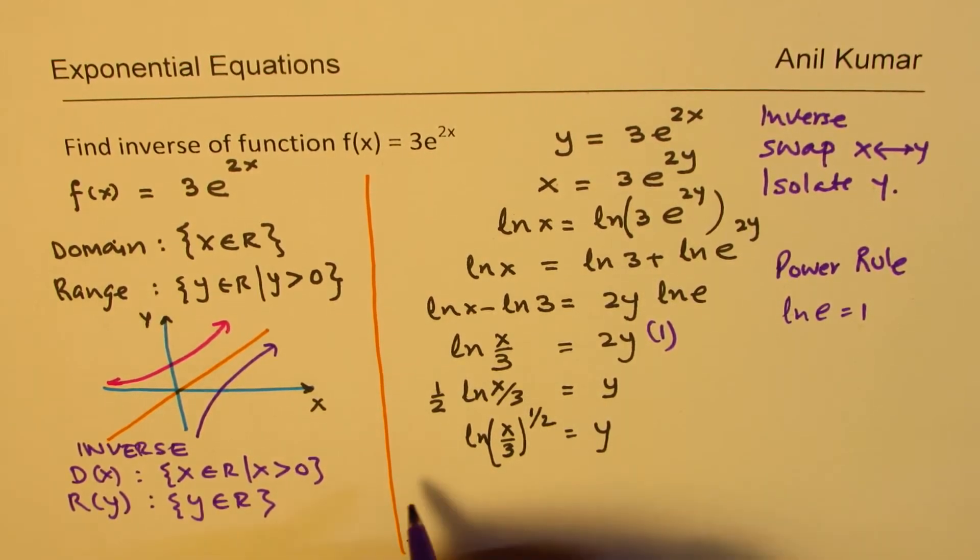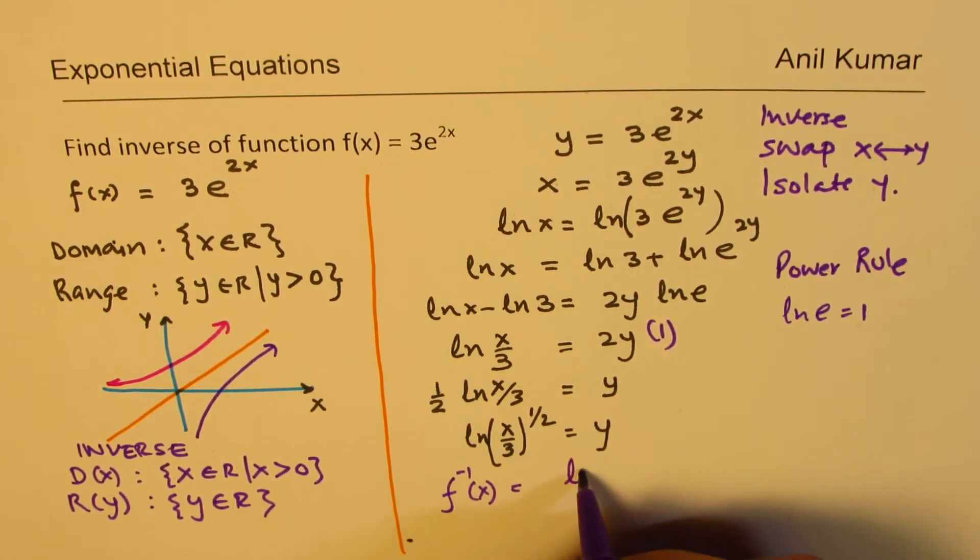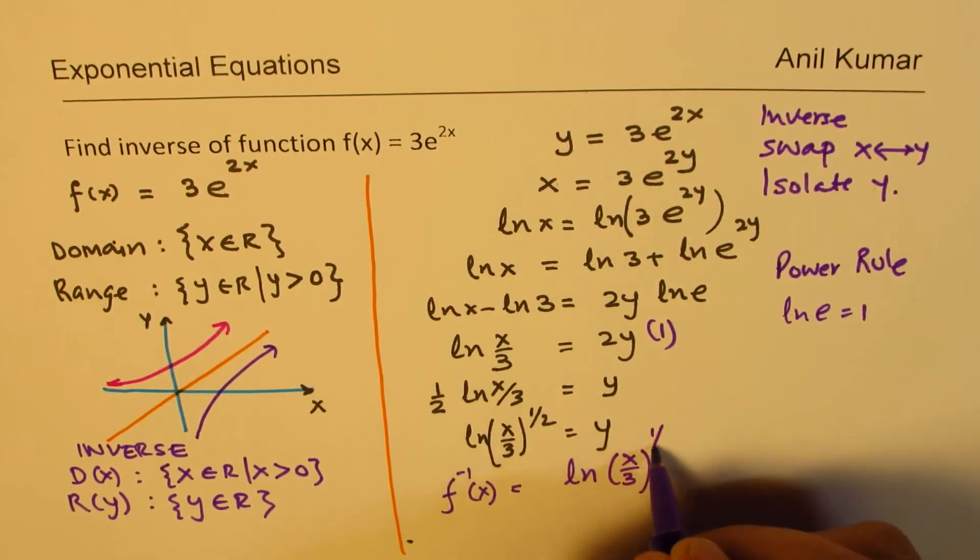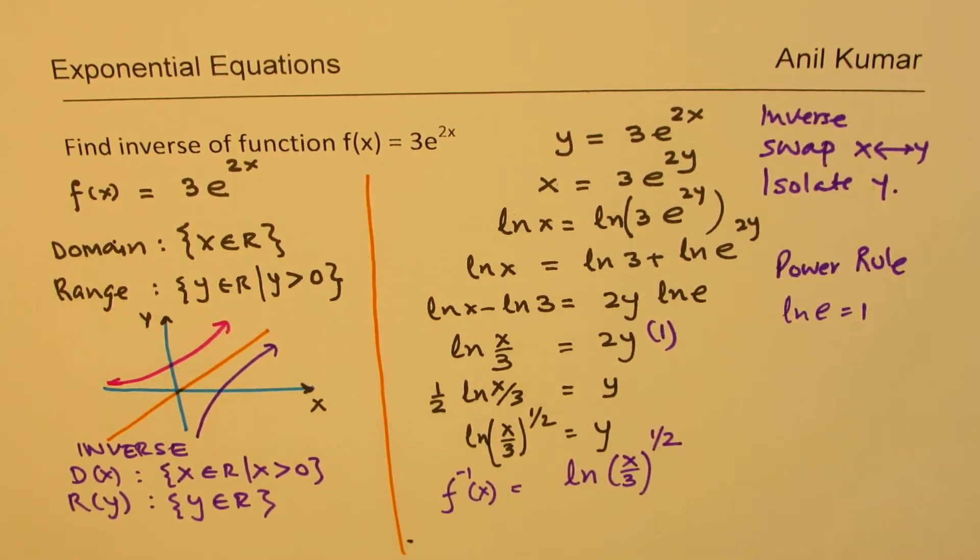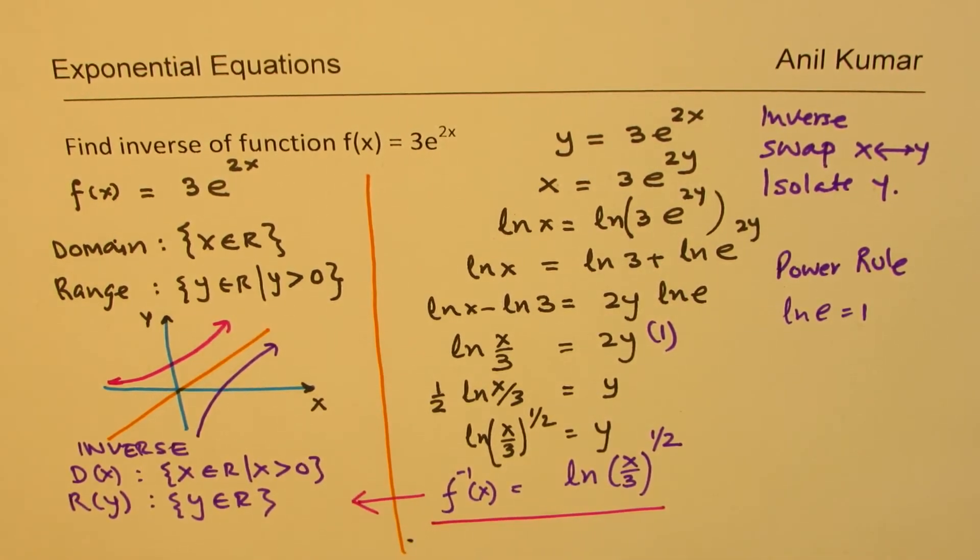So, we can clearly write the inverse of this function as ln(x/3) to the power of half. Is that clear? Whose domain and range is given here, and that is how the graph is going to look like. Perfect. So, that is how we are going to find the inverse of our function.